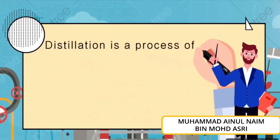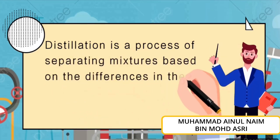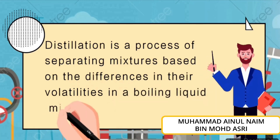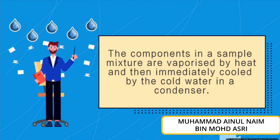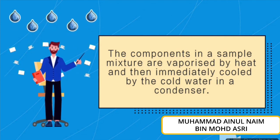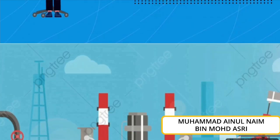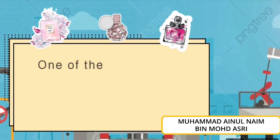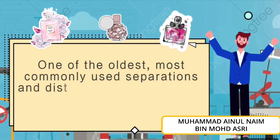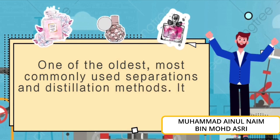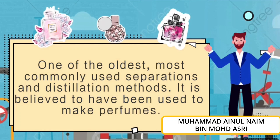Distillation can be defined as a process of separating a mixture based on the differences in their volatilities in a boiling liquid mixture. The components in the sample mixture are vaporized by heat and then condensed by cold water in a condenser. Since ancient times, separation and distillation is one of the oldest and most common methods used, and it is believed to have been used to make perfume.